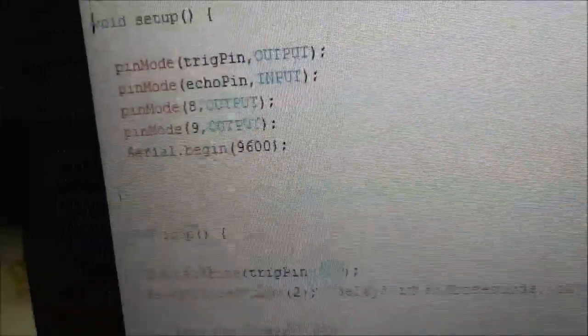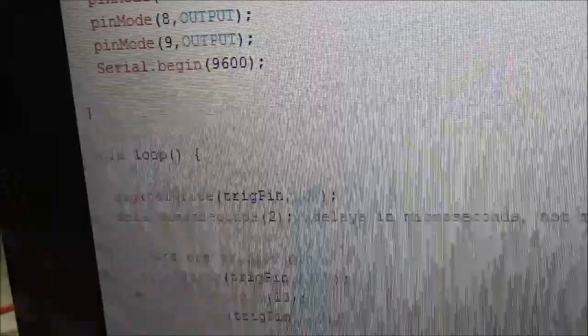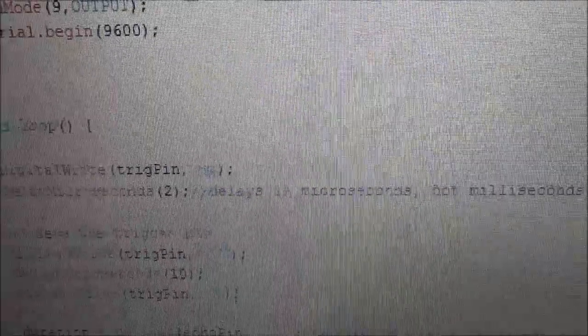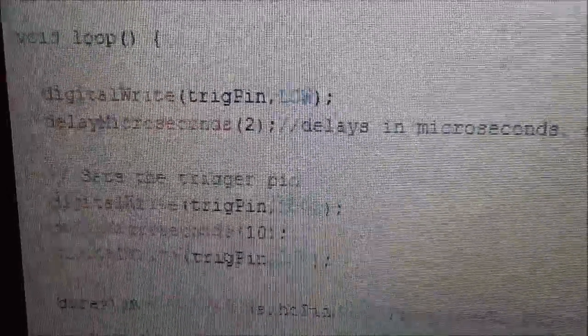So in the void loop function, I just did it to cross check the variables. Then the void loop function, the first statement is the digital write statement to the trigger pin to low, since we don't want to start off all of a sudden. Then I have put delay microseconds to 2.